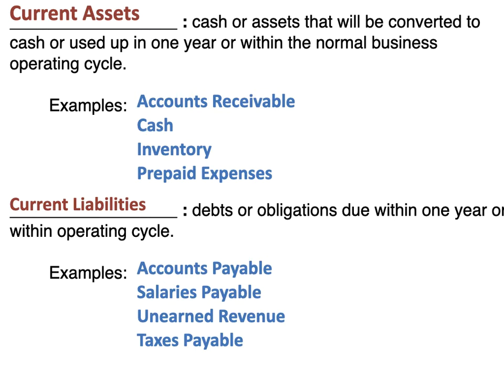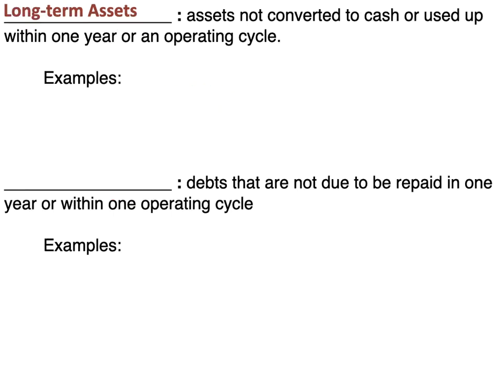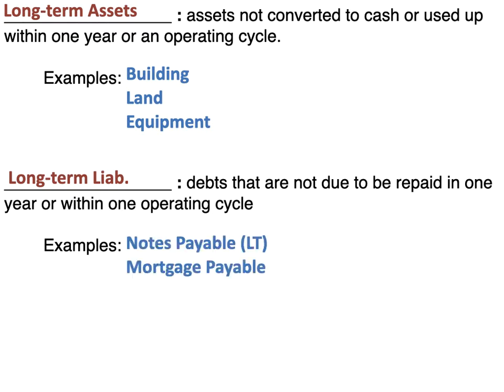Now let's look at the flip side — long-term. Long-term assets are assets that are not converted to cash or used up within one year or an operating cycle. Some examples would be building, land, and equipment. Long-term liabilities are debts that are not due to be repaid in one year or within one operating cycle. Examples would be notes payable that are long-term and mortgage payable.